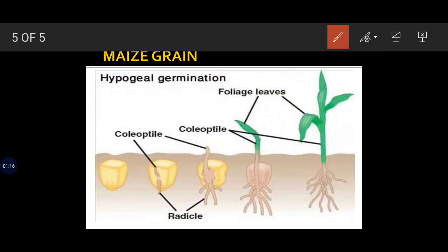The coleoptile and the coleorhiza we have already studied when describing the maize grain. The coleorhiza is a protective sheath that protects the radicle. The coleoptile is the sheath which protects the plumule.